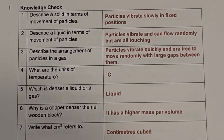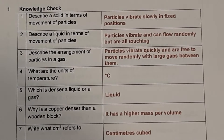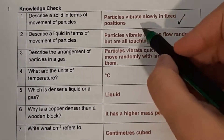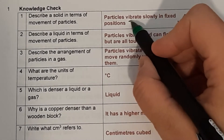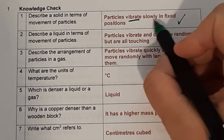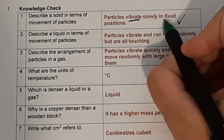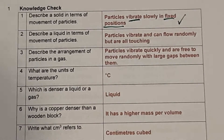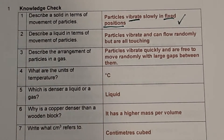Okay, let's go through those. Question one: describe a solid in terms of movement of particles. Particles vibrate slowly in fixed positions. The key words here are that they vibrate, that there's fairly slow vibration, and that it's fixed positions. Those are the three key parts of this answer.